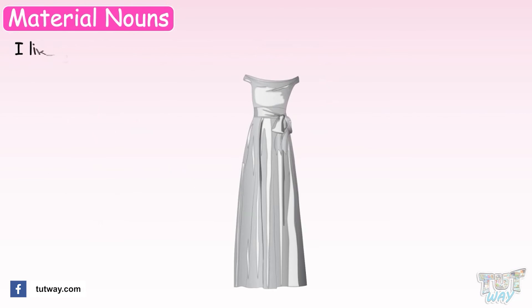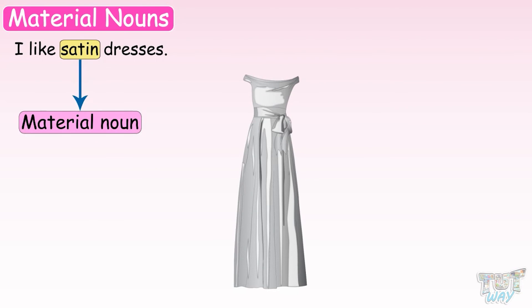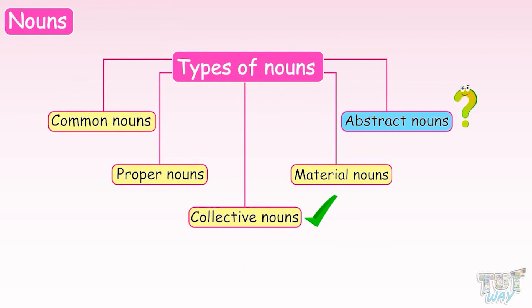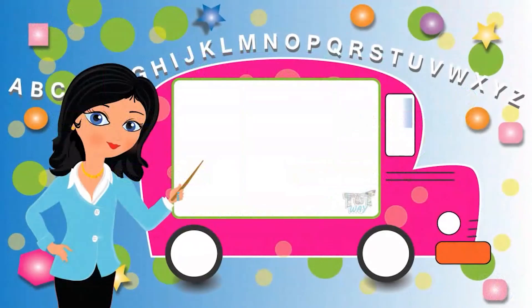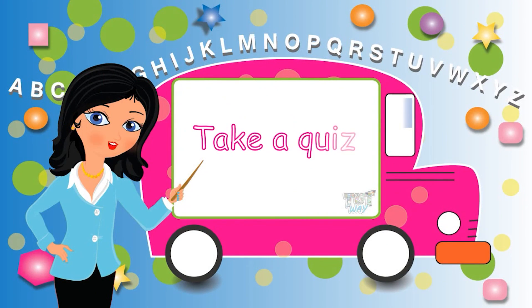I like satin dresses. Here the material noun is satin. So kids, we have learned about collective nouns and material nouns. We will learn about abstract nouns in the next section. Now you can go ahead and take a quiz to learn more. Bye-bye!